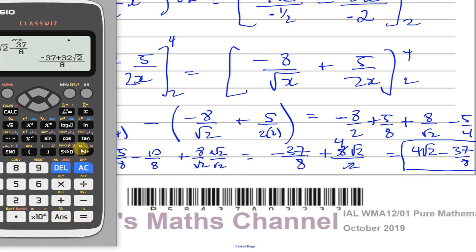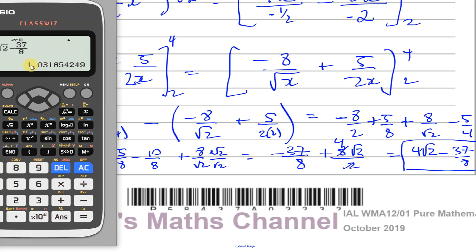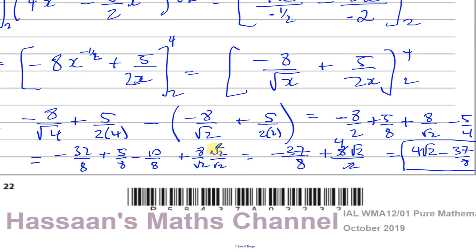Both calculations give the same value of approximately 1.0318, confirming the answer is correct. If you prefer to write it as a single fraction, multiplying top and bottom by 8 gives 32 root 2 minus 37 all over 8, which is also perfectly fine.